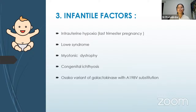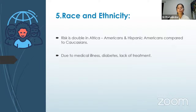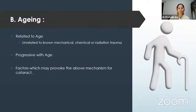Other maternal causes include endocrine disturbances, use of alcohol and drugs during pregnancy, and radiation exposure. Infantile factors include intrauterine hypoxia especially in the last trimester, Lowe syndrome, myotonic dystrophy, congenital ichthyosis, and the Osaka variant of galactokinase with A198V substitution. Regarding gender, women are more prone than men due to lack of estrogen in postmenopausal years — estrogen receptors have been found on the lens capsule. Regarding race, risk is doubled in African Americans compared to Caucasians, partly due to lack of medical access and higher rates of diabetes.